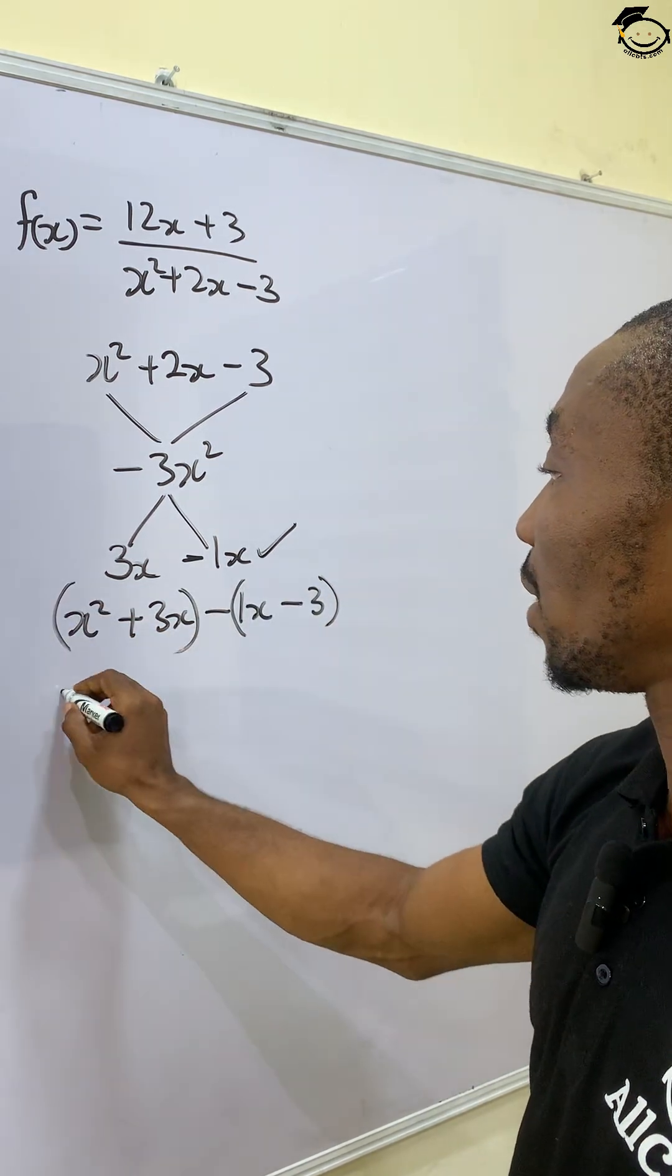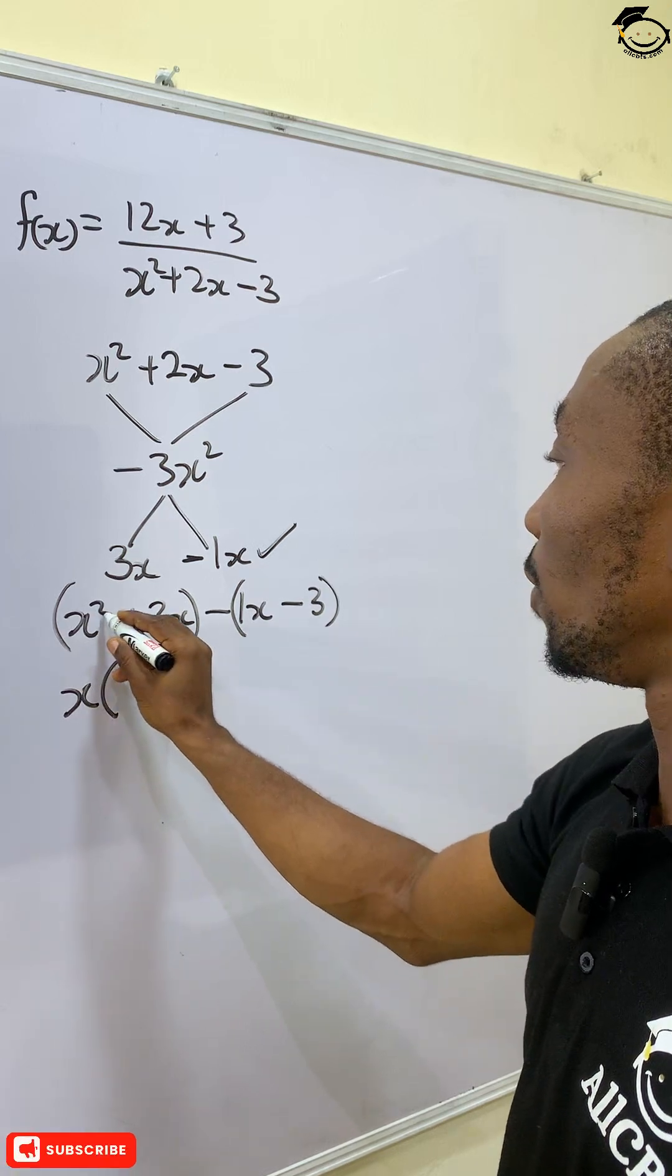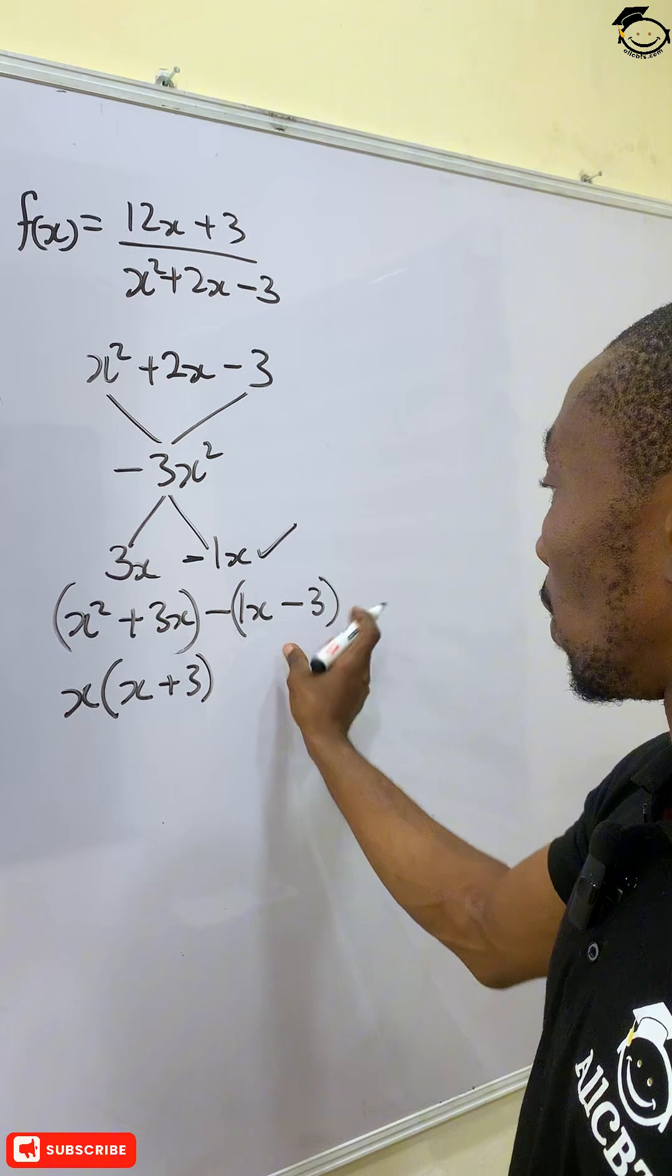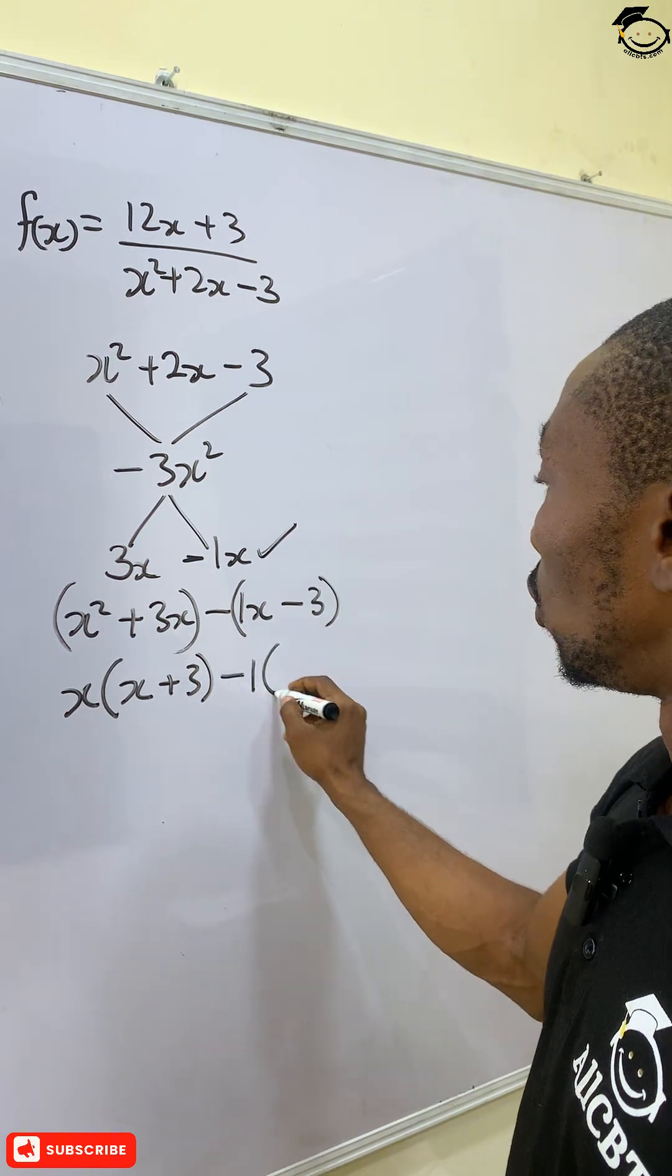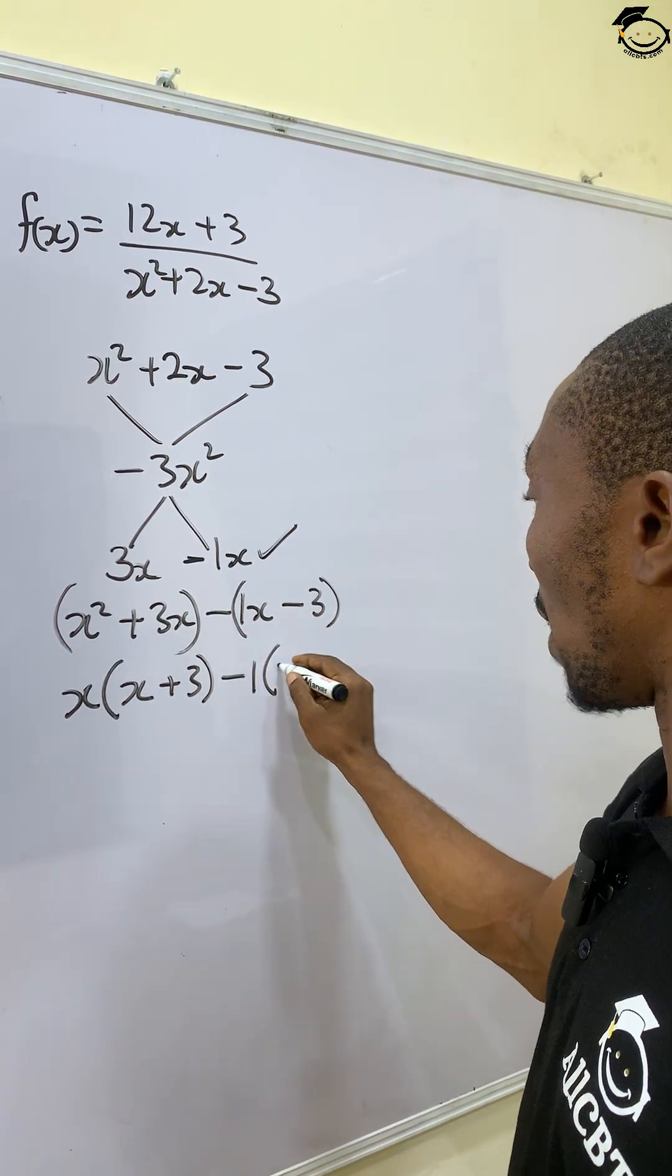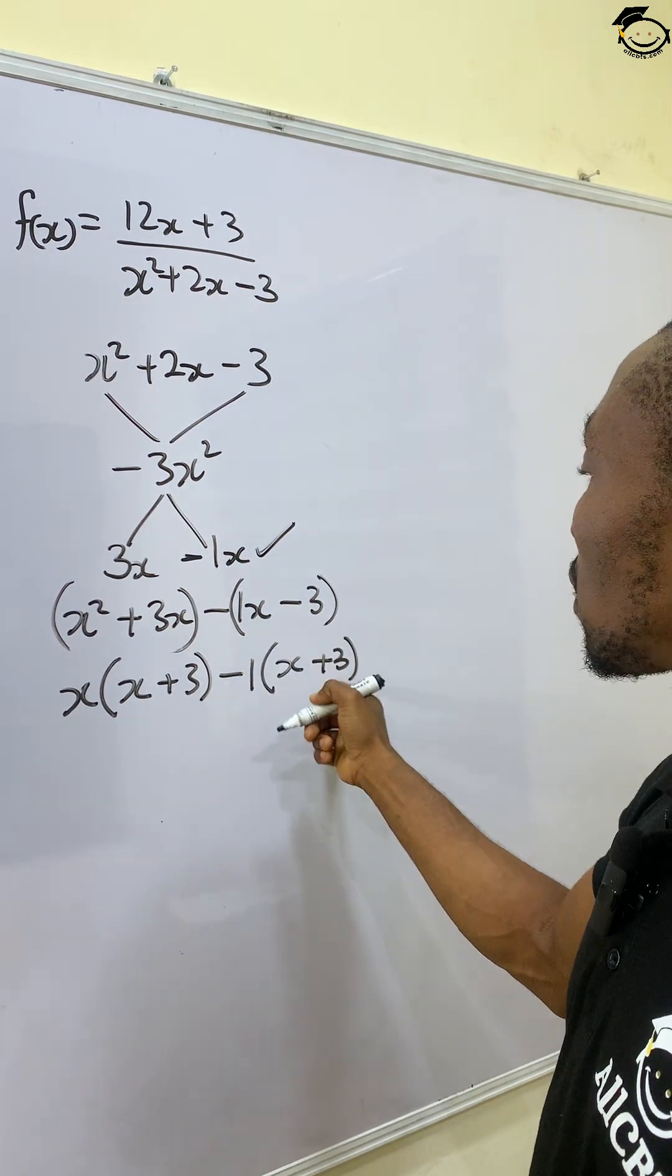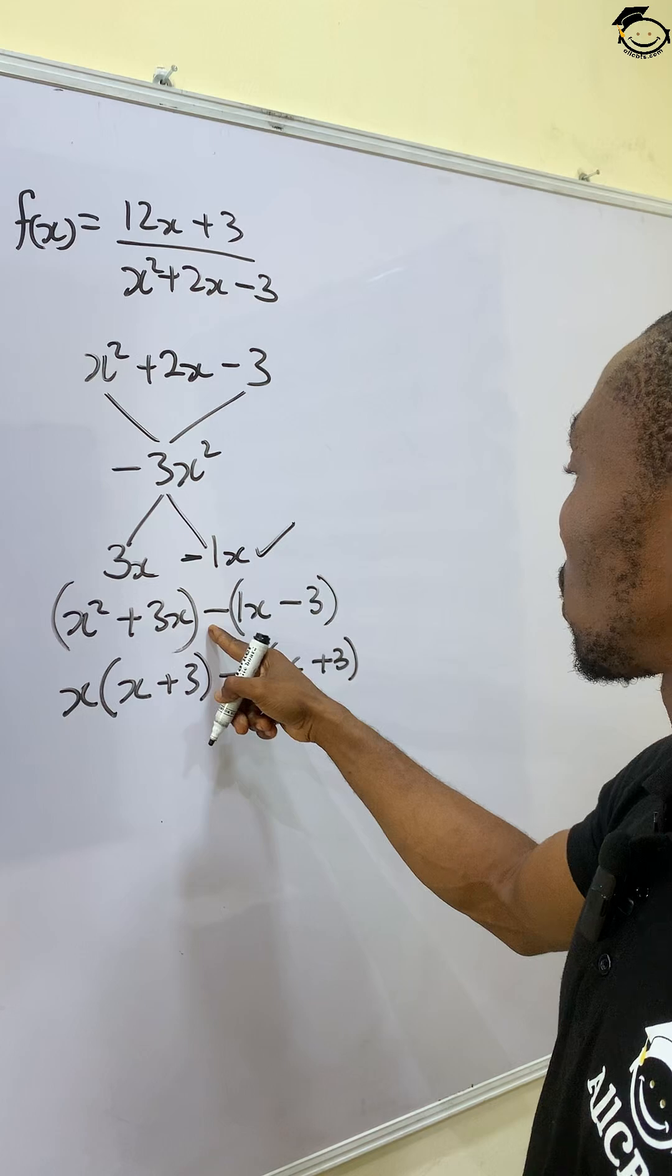What's common here is x. Removing 1x from here, we have x plus 3. What's common here is 1. Removing 1 from here, we have x plus 3. Now why did our sign change to plus? Minus minus to give us plus.